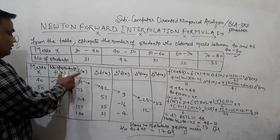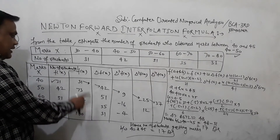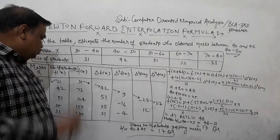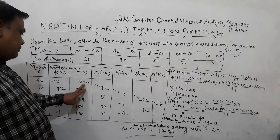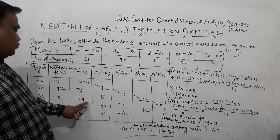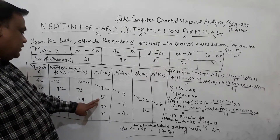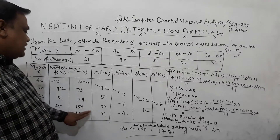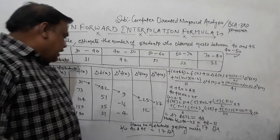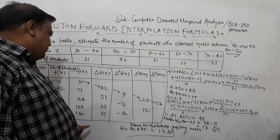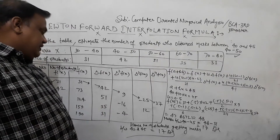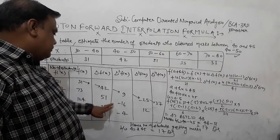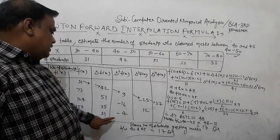Now we compute the difference table. First differences: 83-41=42, 124-83=41... continuing. For higher differences: 51 minus 42 is 9, 35 minus 51 is -16, and 31 minus 35 is -4. Second differences: -16 minus 9 is -25, -4 minus (-16) gives values for the delta squared and delta cubed columns.